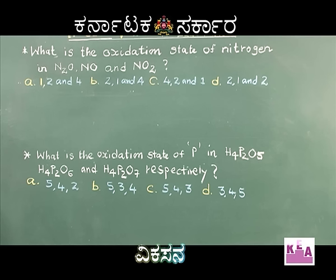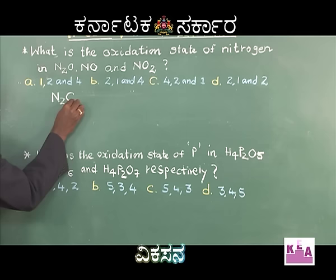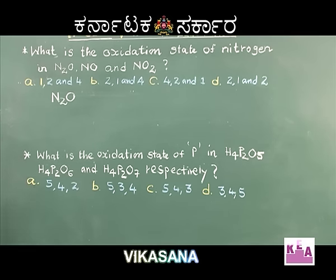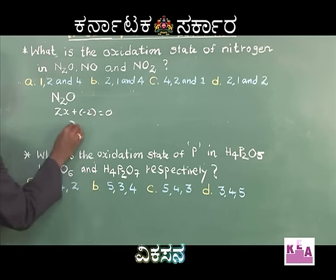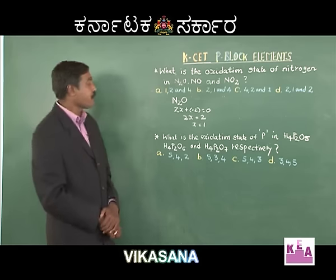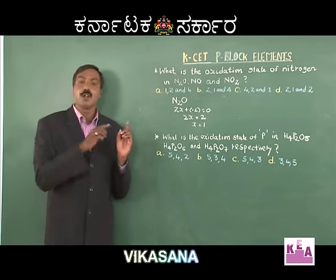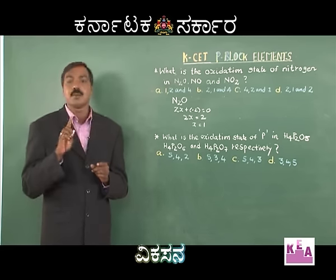I have with me nitrous oxide, nitric oxide, and nitrogen dioxide. Let us categorically work through this. To calculate the oxidation state of N₂O, nitrogen is the unknown element. I write it as 2x + (-2) = 0, so 2x = 2, and x = +1. From this I understand that the first answer should be +1.